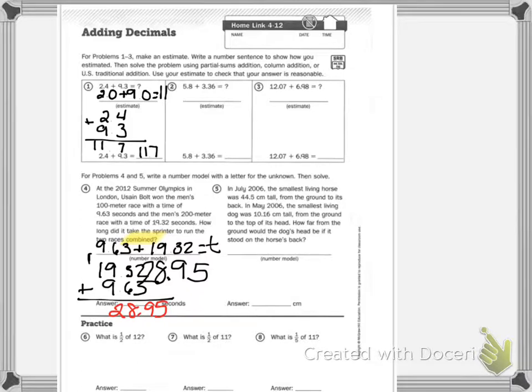Try 5 on your own. I'm going to highlight what numbers you need. You need 44.5, 10.16. And it says, how far from the ground would the dog's head be if it stood on the horse's back? I'm going to tell you, you need to add those together.